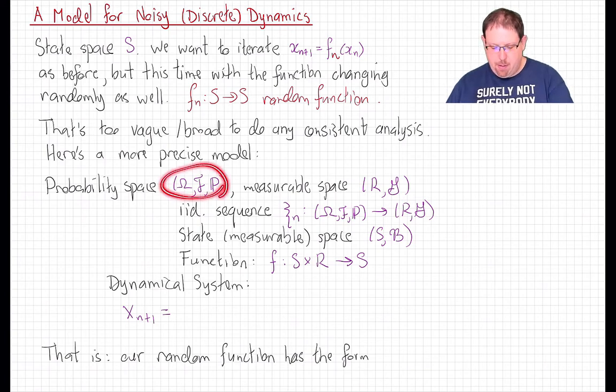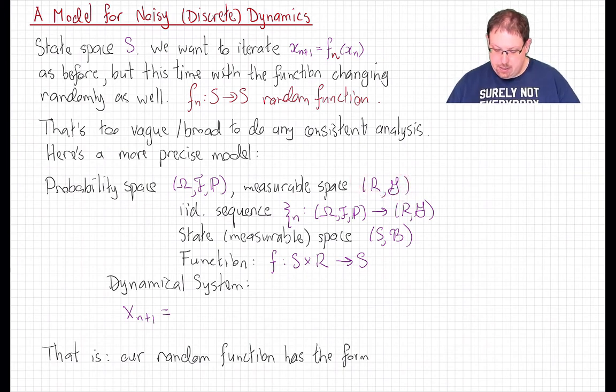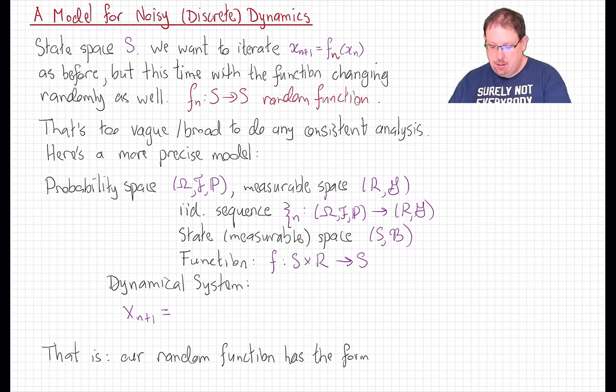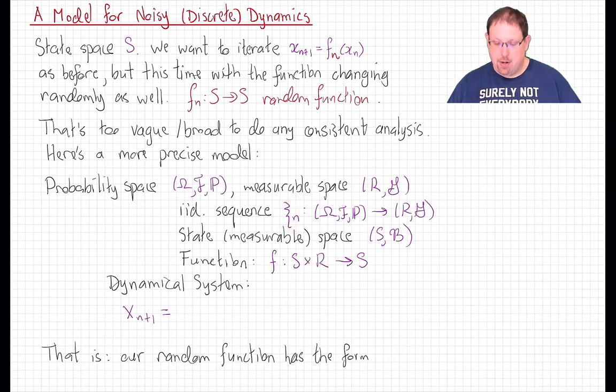So here is the more precise model of random function that we're going to use here for our discrete random dynamical systems. We'll have a background probability space (Ω, F, P). And we'll have another auxiliary measurable space, I'll call (R, G). And living on that auxiliary space, we'll have a sequence of iid random variables ξ_n. This is going to be our noise.